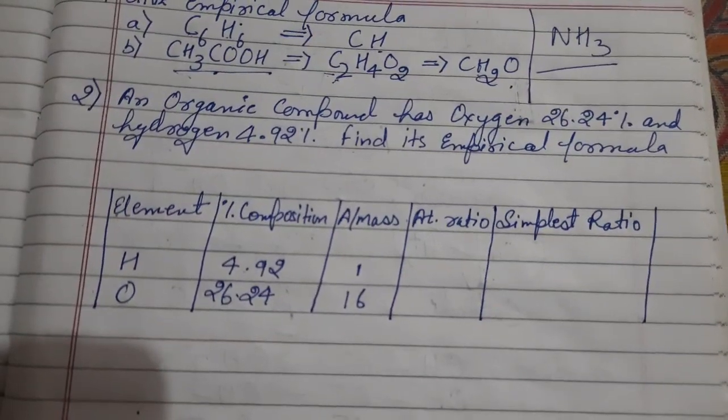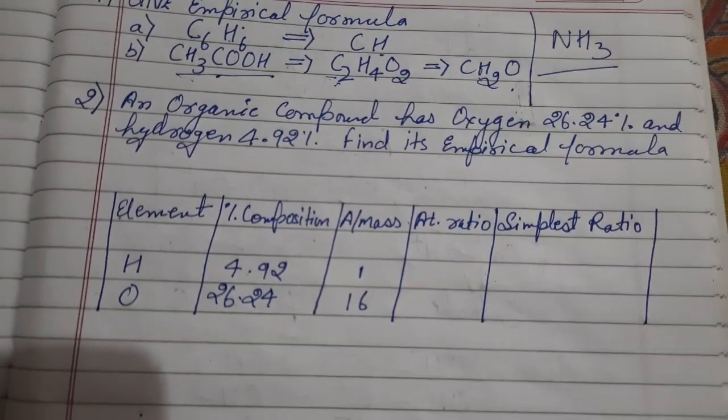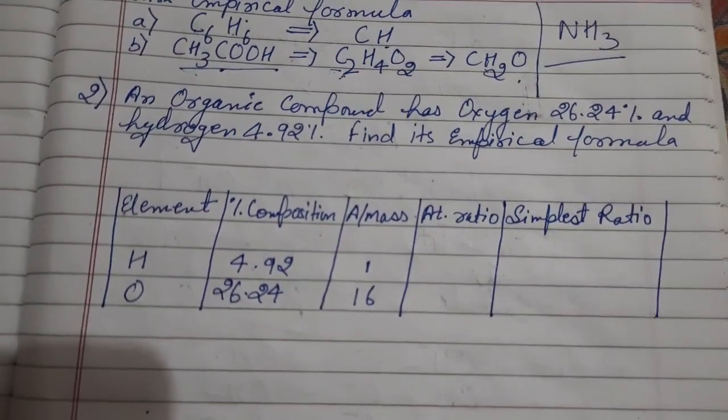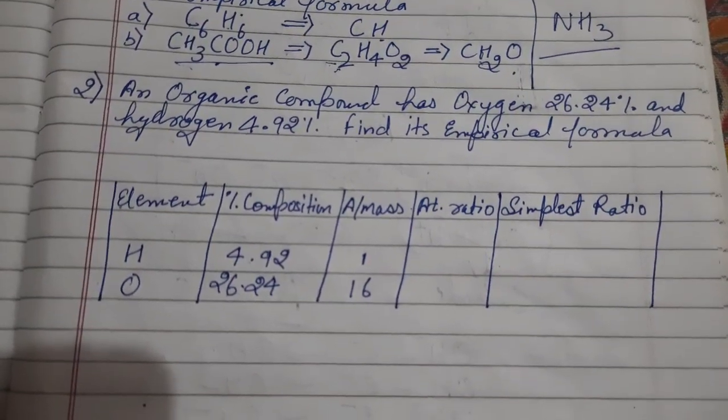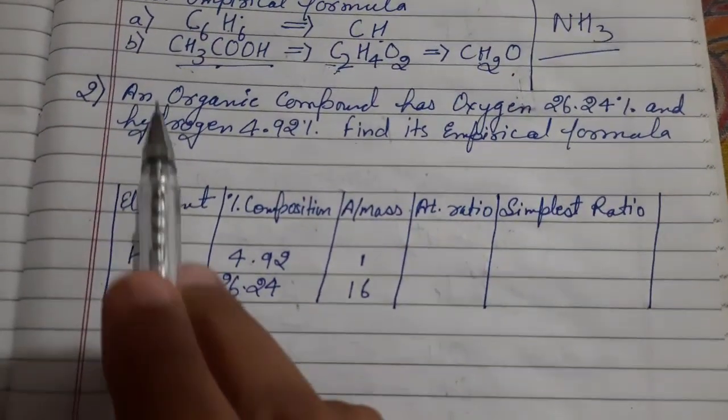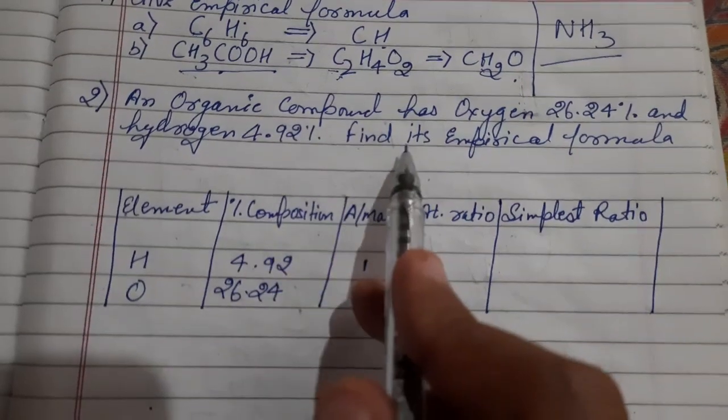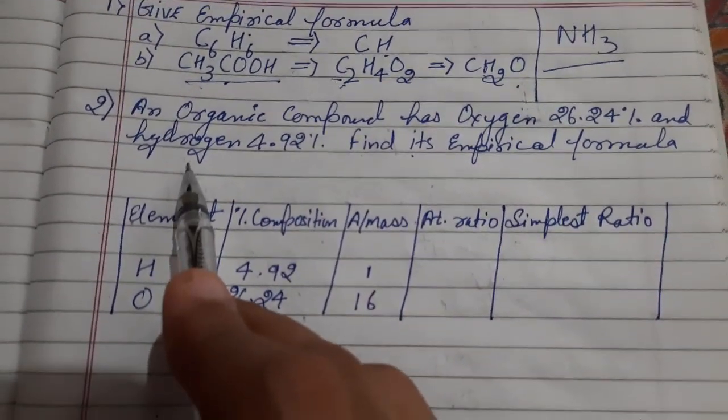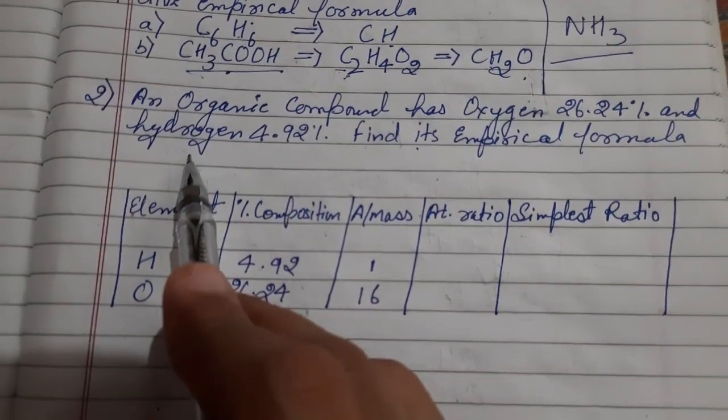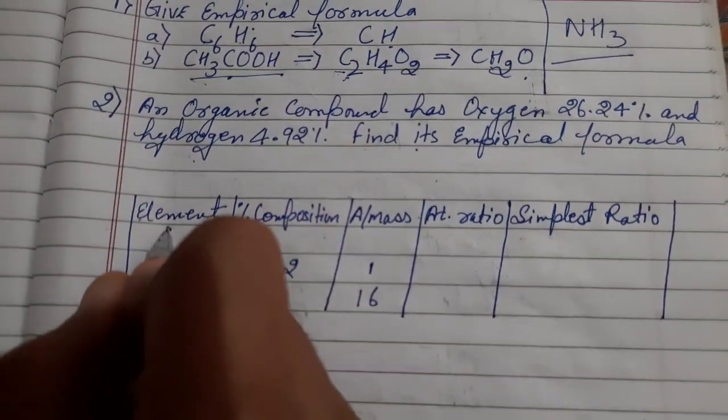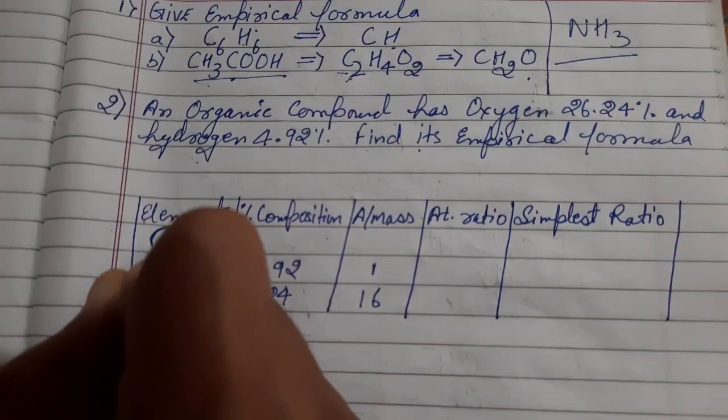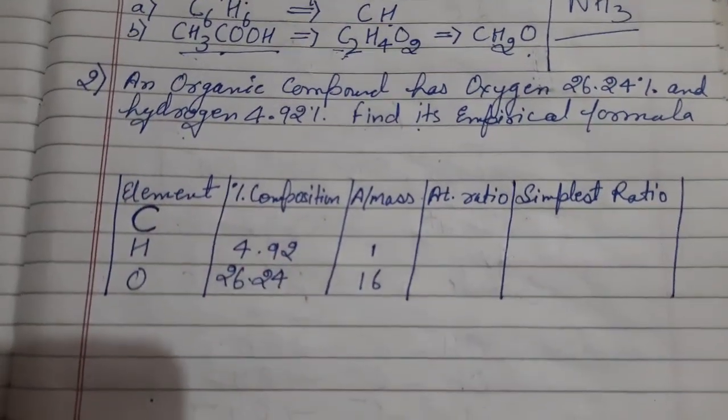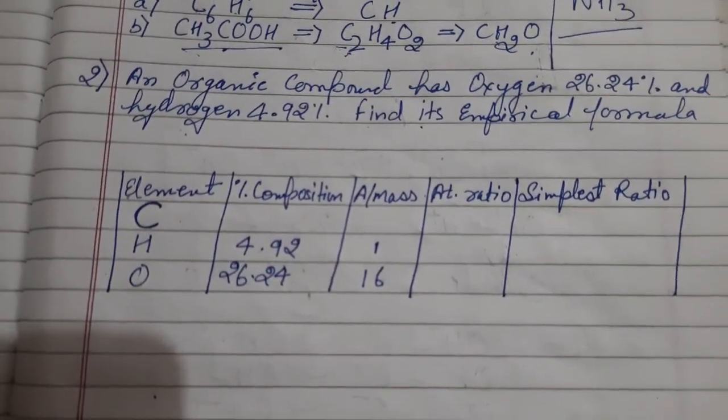Now we will try to learn about a numerical in which we can calculate empirical formula where composition of elements are given. Here we are going to read: an organic compound has oxygen and hydrogen, but you already remember that organic compounds at least contain carbon, so I am writing carbon here.